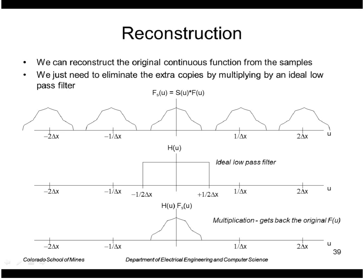Multiplying this times this we zero out all our copies and we just get back the original function, the original transform of the image.